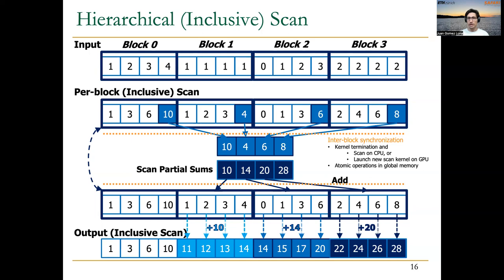In this hierarchical scan, there are different steps. The one you see on the slide is the scan-scan-add implementation, where we first perform a per-block scan, then scan partial sums, and finally perform the addition operation to add offsets to each of the corresponding elements of the per-block scan. This is one implementation. The other one we discussed was the reduce-scan-scan, which saved some memory accesses and is especially more suitable for very large arrays.